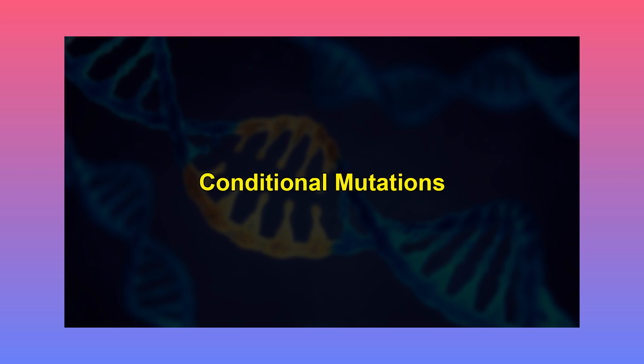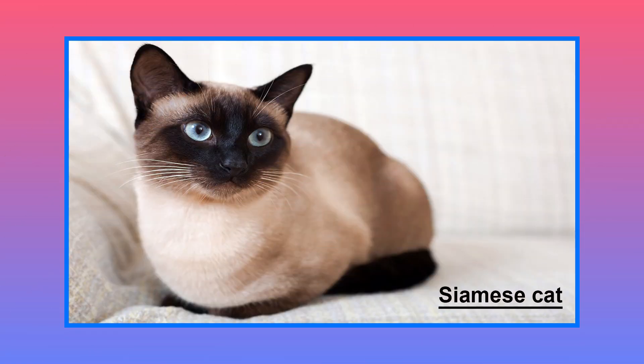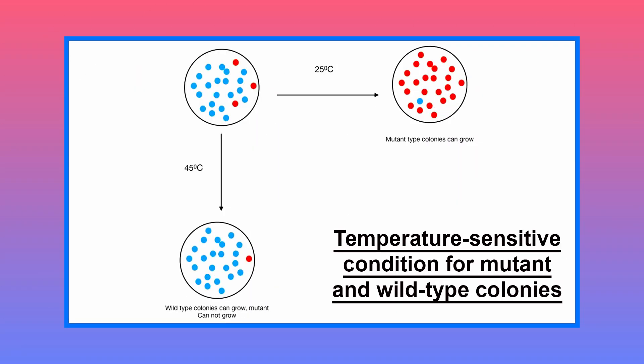Conditional mutations are mutations in which the mutant allele causes the mutant phenotype only in certain environments called restrictive conditions. In permissive conditions, the phenotype is no longer mutant. For example, the Siamese cat: the mutant allele causes albino phenotype at the restrictive temperature of most of the cat body, but not at the permissive temperature in the extremities where body temperature is lower. Conditional mutation is very important in genetic studies, as the characteristics of an allele and how it behaves in different adverse conditions can be studied.